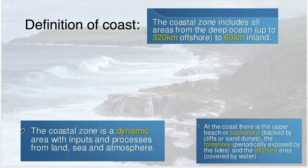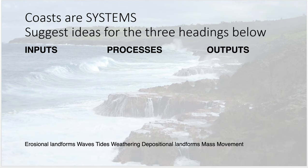The coastal zone is a dynamic system with inputs, outputs, and processes — like a drainage basin or the water cycle. Importantly, the coastal zone is not a closed system; it is an open system. Dynamic means it is constantly changing and constantly moving. This box here shows that at the coast there is a backshore, foreshore, nearshore, and offshore, which basically defines the littoral zone, which we'll come to in a later slide.